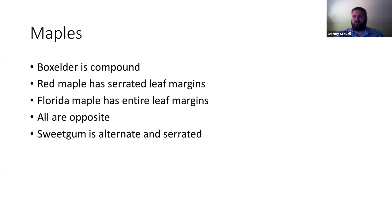Maples are surprisingly slightly more difficult online. People mix up red and Florida maple more. Remember all the maples are opposite. Look at the leaf margins: Florida maple has smooth or entire leaf margins, red maple has serrated leaf margins — that's diagnostic. Box elder is compound. It's easy to confuse both maples with sweet gum, more so online. Sweet gum is both alternate and has serrated leaf margins, and is usually easier to confuse with Florida maple, so both those features will help you avoid that mistake.